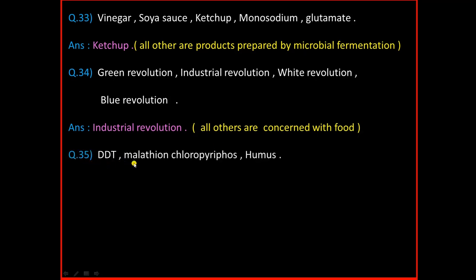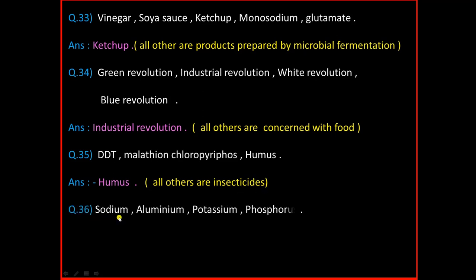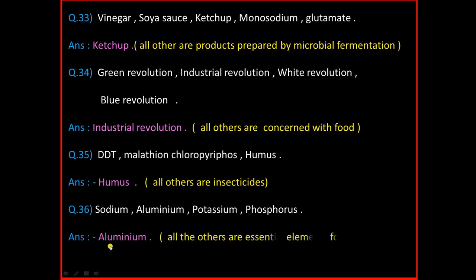Question Number 35: DDT, Malathion, Chlorpyrifos, Humus. And the answer is Humus. All others are insecticides. Question Number 36: Sodium, Aluminium, Potassium, Phosphorus. And the answer is Aluminium. All others are essential elements for plant growth.